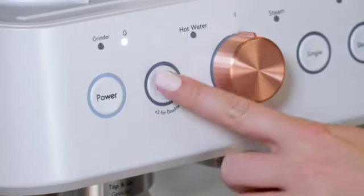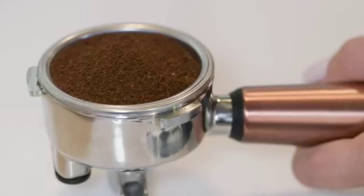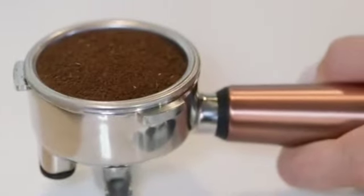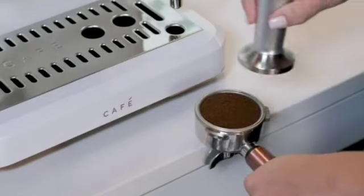Press the grind button once for a single shot. Quickly press the grind button twice for a double. When grinding is complete, remove the portafilter and gently tap to even out the coffee grounds. Tamp down firmly using the tamper.